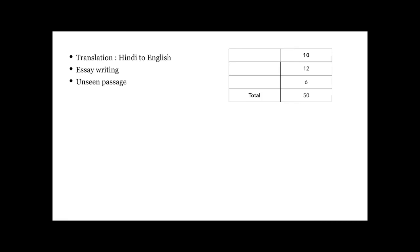Then comes your translation. In translation, the translation will be from Hindi to English. A paragraph will be given to you. For that, you have to translate into English for 10 marks. Essay writing, this is a long composition of 12 marks. And an unseen passage will be given to you. That will contain some 4 to 5 questions with 6 marks. In that, you have to write a summary, you have to give a title, you have to give answer to one question and you have to give some meanings of hard words 1 or 2.